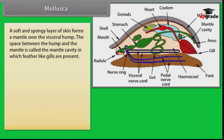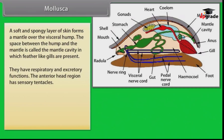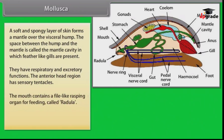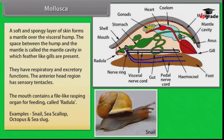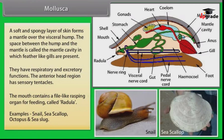A soft and spongy layer of skin forms a mantle over the visceral hump. The space between the hump and the mantle is called the mantle cavity, in which feather-like gills are present with respiratory and excretory functions. The anterior head region has sensory tentacles. The mouth contains a file-like rasping organ for feeding called the radula. Examples: snail, sea scallop, octopus and sea slug.